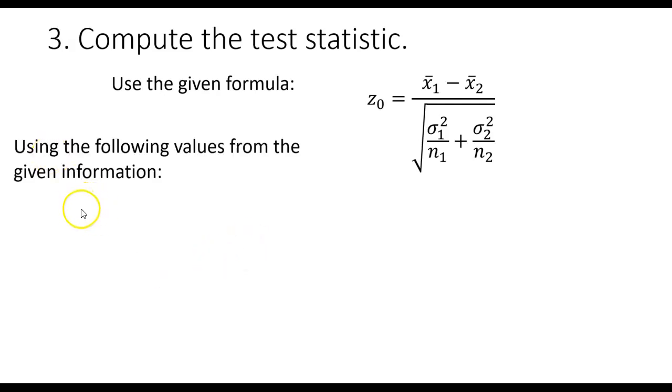We're going to use the following values from the given information. Remember at the beginning, when I said write down what you have as you go through, it's going to make your life a lot easier if you have the pieces of data written down. They give you the sample mean from 2015, that'd be x-bar sub 1. They give you the sample mean for 2018, x-bar sub 2.